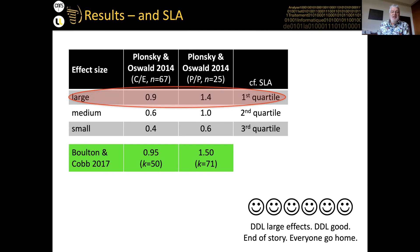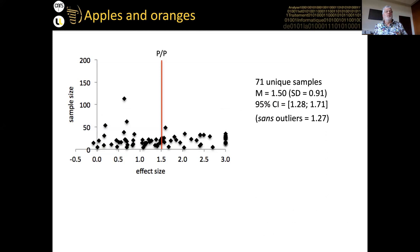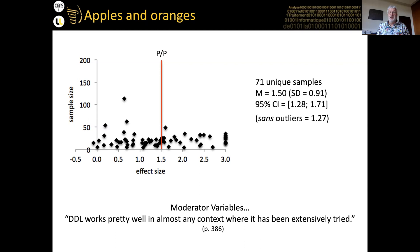Ideally we'd want a large effect size for both control-experimental and pre-post-test designs — and we did. So DDL produces large effects. But you can't get the entire picture from one or two numbers; language learning is more complicated than that. On a graph with effect size on the x-axis, the red line shows the mean, but each individual point is an individual study. Some studies have higher, some lower effect sizes — where does that variation come from? That's the key point.